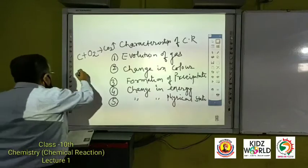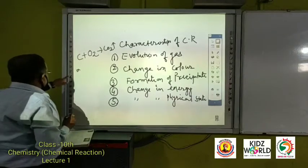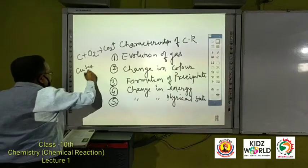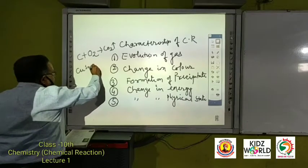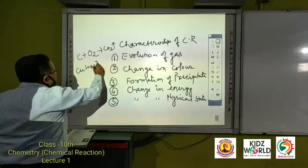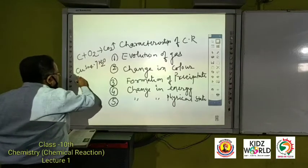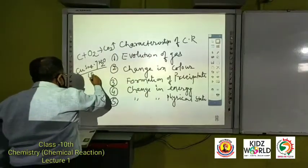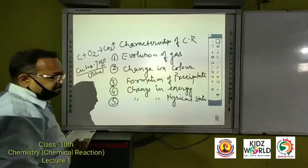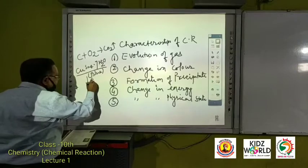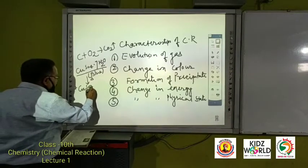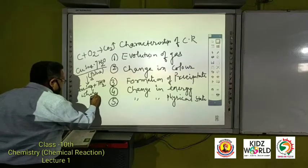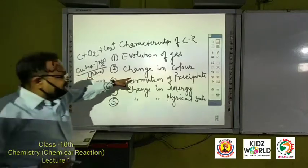Change in color. All of you know that CuSO4·7H2O, this is the crystal of copper sulfate, and color is blue. When it will be heated, it will change into CuSO4 plus 7H2O, and it will become white. This is the example of change in color.